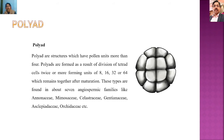Polyads are structures which have more than four pollen units — in multiples of 4, such as 8, 16, 32, or 64 — which remain together after maturation. These are found in about seven angiosperm families like Annonaceae, Mimosaceae, Celastraceae, Gentianaceae, Asclepiadaceae, and Orchidaceae.